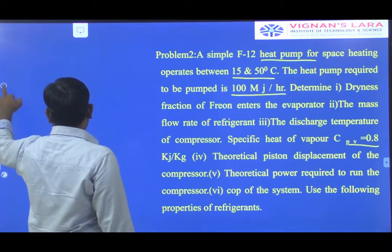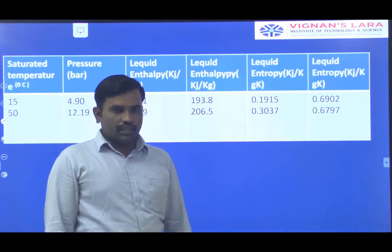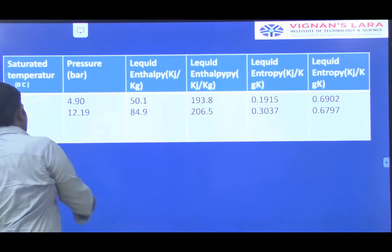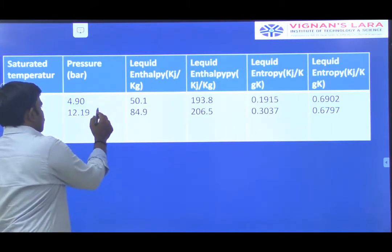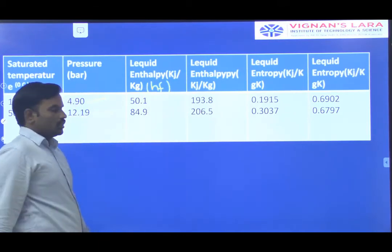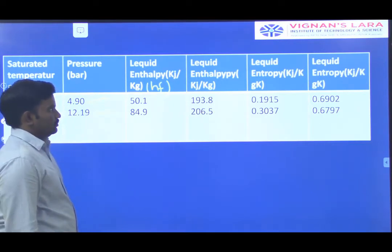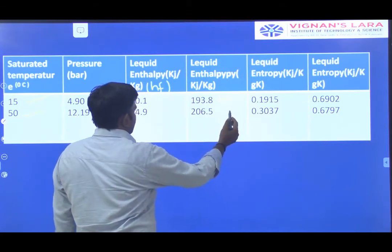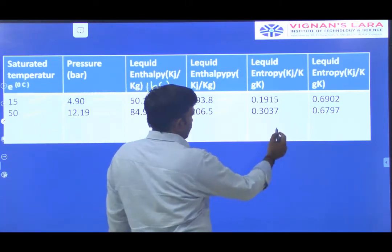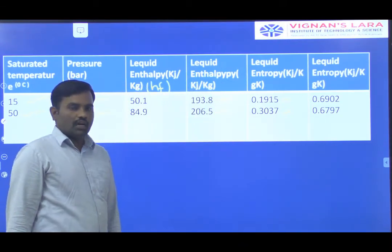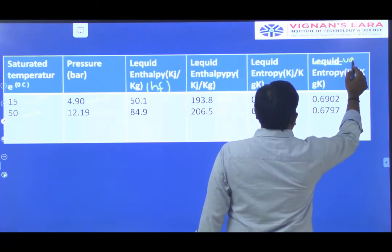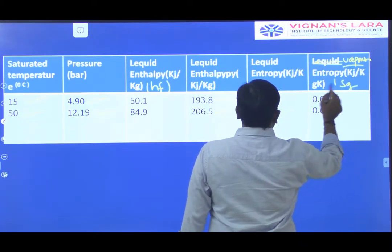For this we use the properties of the F12 refrigerant. Properties are given at 15 and 50 degree centigrade temperature limits. Pressure values given are 4.90 and 12.19. Liquid enthalpy HF values at both operating temperatures are 50.1 and 84.9 kilo joule per kilogram. Vapour enthalpy HG values are 193.8 and 206.5 kilo joule per kilogram. Liquid entropy SF values are 0.1915 and 0.3037 at both operating temperature limits.